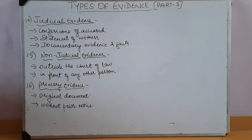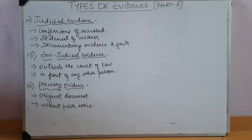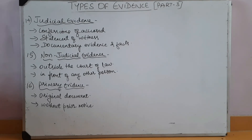The next type is non-judicial evidence. Non-judicial evidence primarily refers to the confession made by the accused outside the court of law and in the presence of any person. If such evidence is proved in the court of law, then it takes the form of judicial evidence. Next, primary evidence. Primary evidence is an original document that needs to be submitted before the court for inspection. This type of evidence is admissible without prior notice.